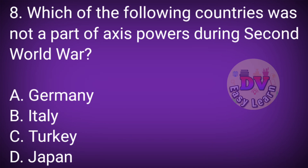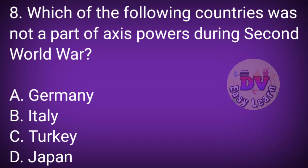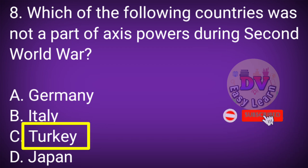Question No. 8: Which of the following countries was not a part of the Axis powers during the Second World War? Correct answer: Turkey.